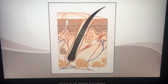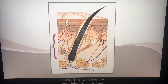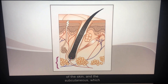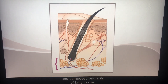Skin has three main layers. The epidermis, which is the outermost layer of the skin. The dermis, which is the underlying or inner layer of the skin. And the subcutaneous, which is located below the dermis layer and composed primarily of fatty tissue.